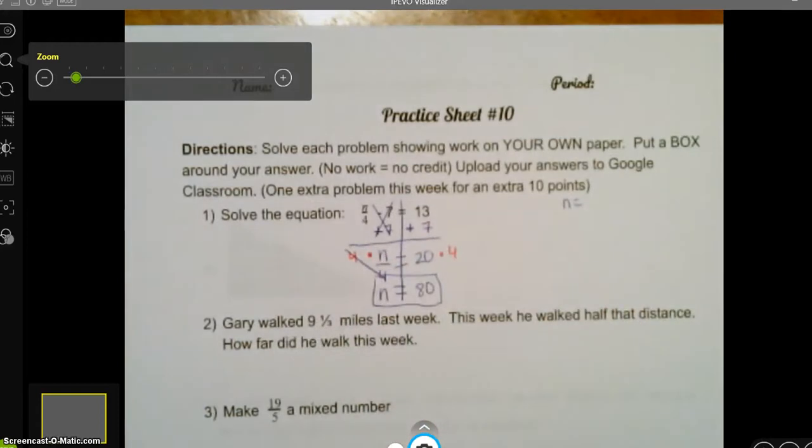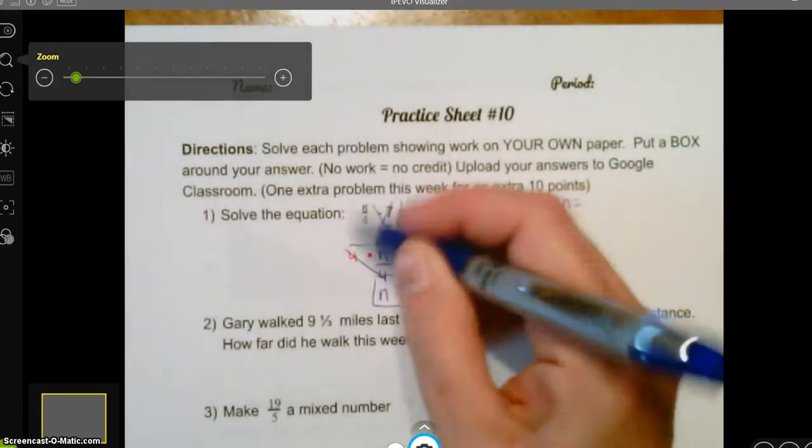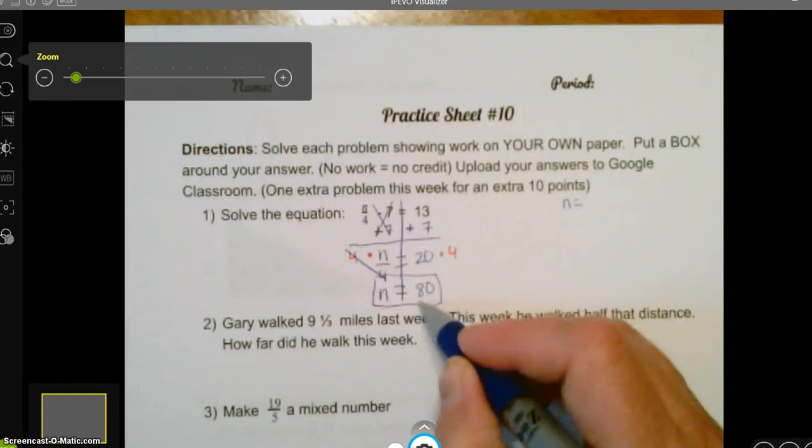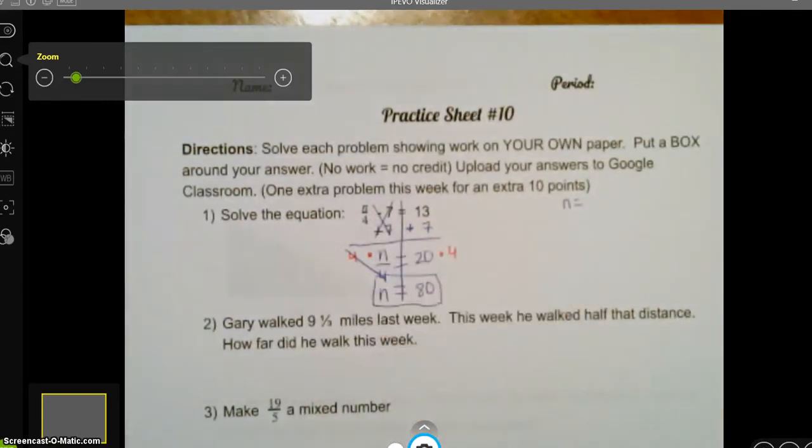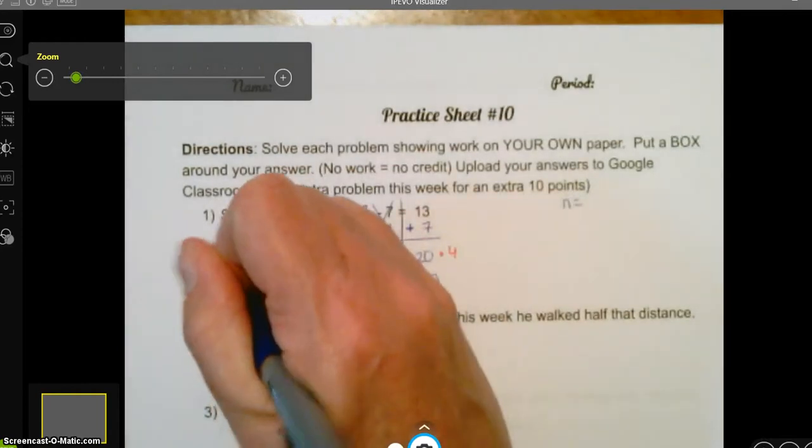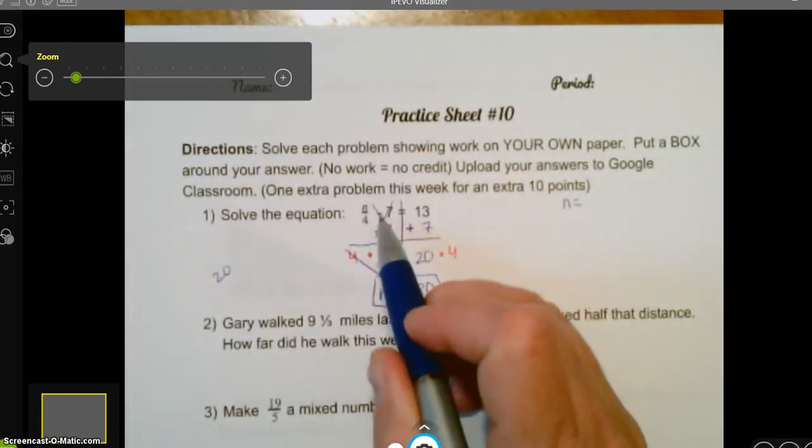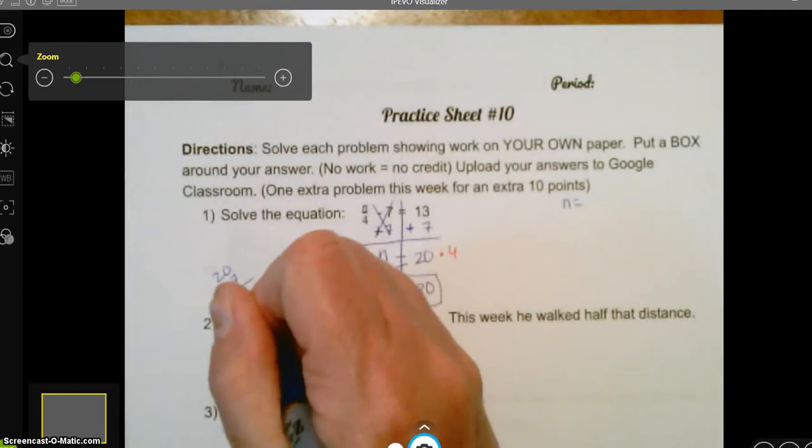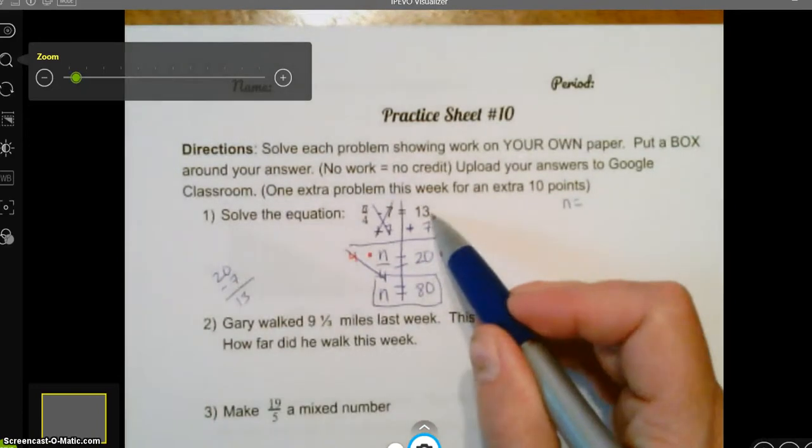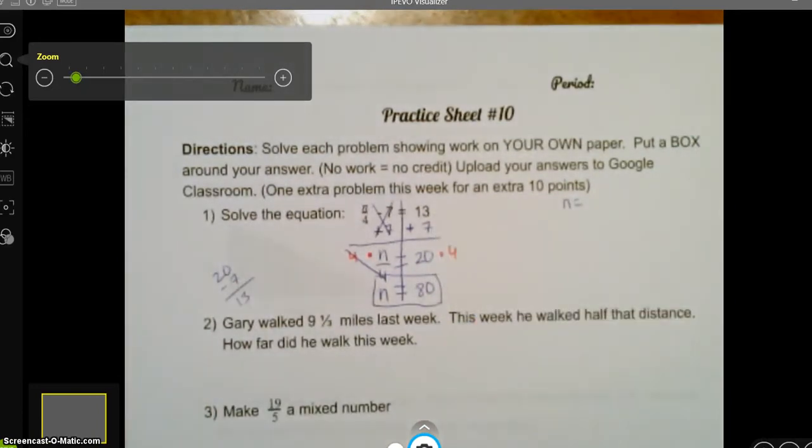Now, just to prove it, I'm going to do this kind of fast, because it's just a proof here. N is 80. So I see in here, 80 divided by 4, I know that one. 80 divided by 4 is 20. So that's 20. 20 minus 7 is 13. So we did it correct. So here's my answer. This was just a check.